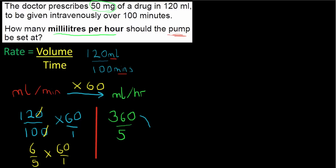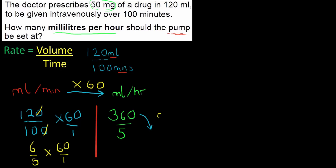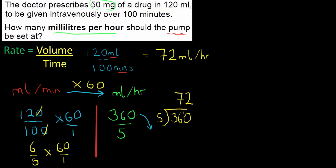To work out 360 over 5, I work out 5 into 360. 5 into 3 doesn't go; 5 into 36 goes 7 remainder 1; 5 into 10 is 2. Our answer comes out to be a nice whole number: 72 millilitres per hour. The whole point of multiplying by 60 was to convert into the correct units.